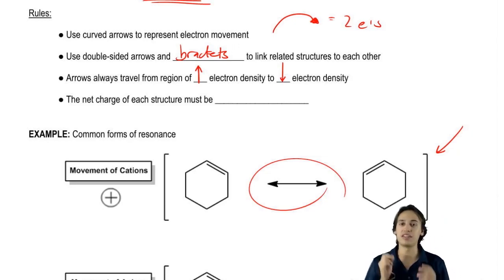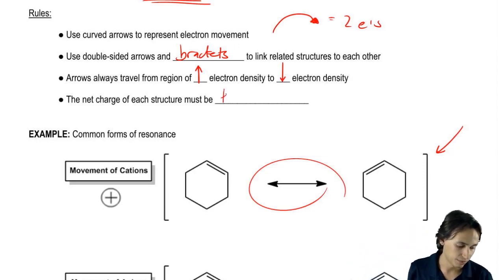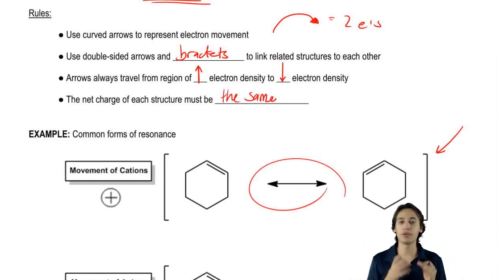And then finally, the net charge of all the structures that we make must be the same. The reason for that is that resonance structures are different ways to represent the same molecule. All of them should have the same net charge because we're just distributing the electrons different, but we're not adding any electrons or subtracting any electrons.